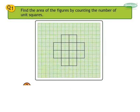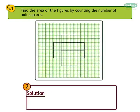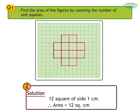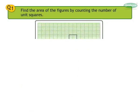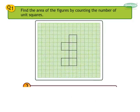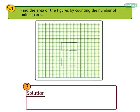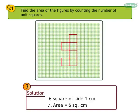Number 2 solution: 12 squares of side 1 cm. Therefore, area is equal to 12 cm². Number 3 solution: 6 squares of side 1 cm. Therefore, area is equal to 6 cm².